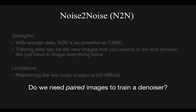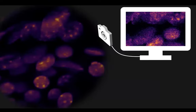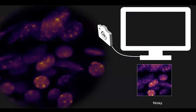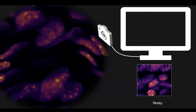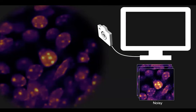This led researchers to ask: do we actually need paired images to train a denoiser? One response came from Noise2Void, which observed that in some circumstances, target images for the network can be produced from the input images themselves. The training data collection for Noise2Void is simple: you image everything once using low brightness and build up a dataset of unpaired individual noisy images.